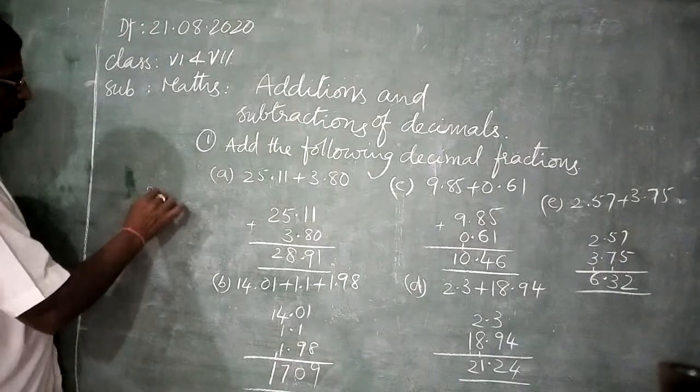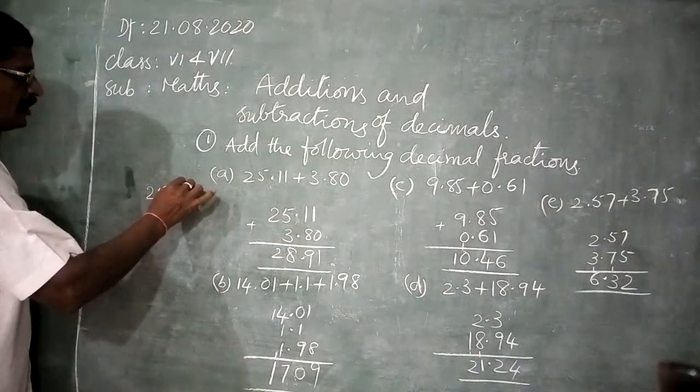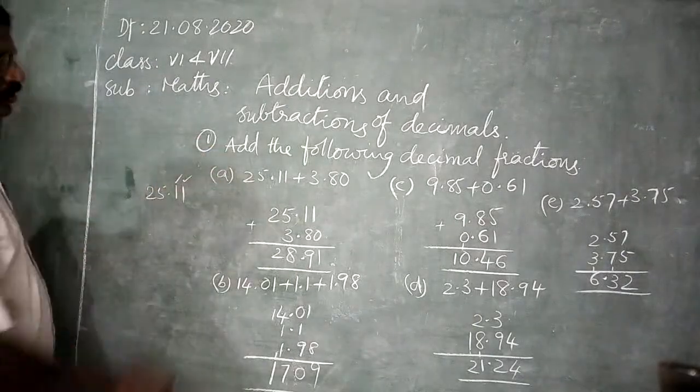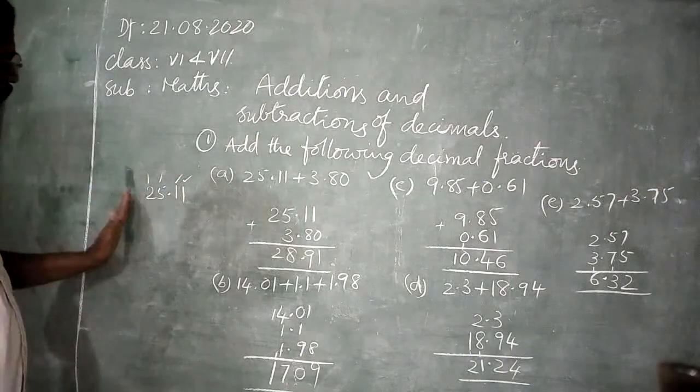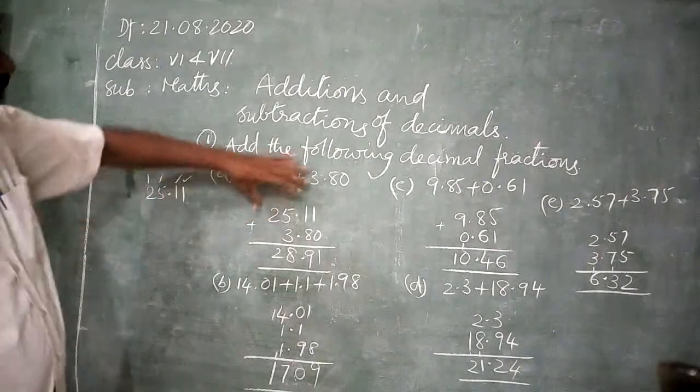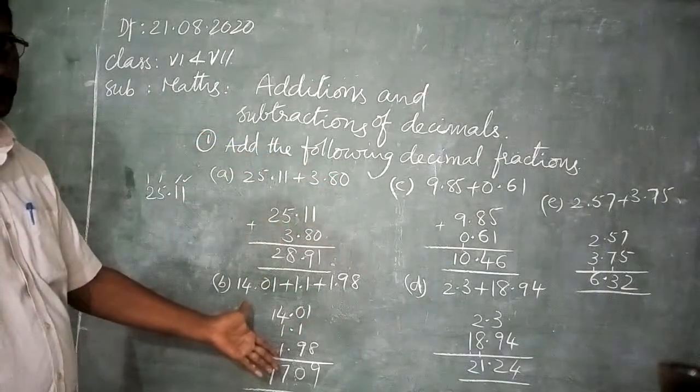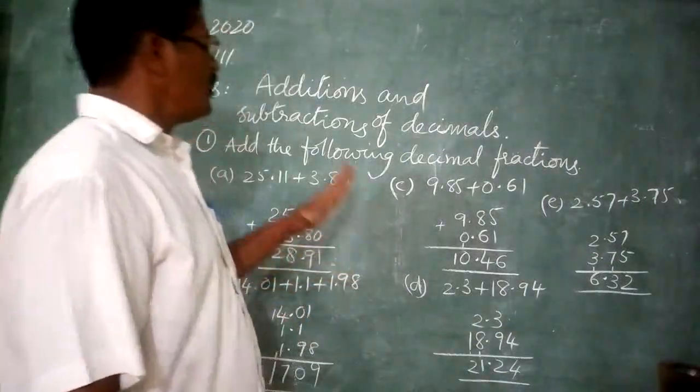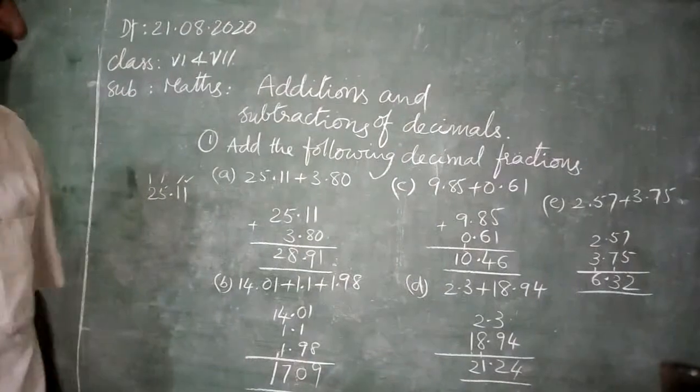Suppose 25.11, 1.1. This is hundred. This is tenth. This is decimal point. Ones. Ten. See the place values. So write the place values perfectly. Then addition. Then do the addition. This is the addition of decimal fractions. Next.